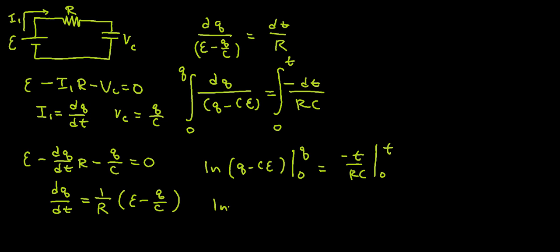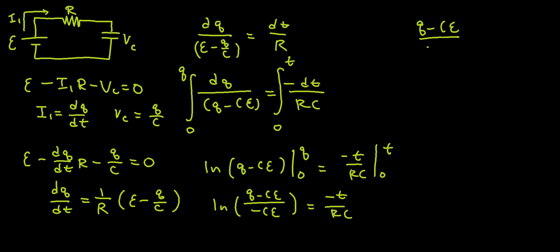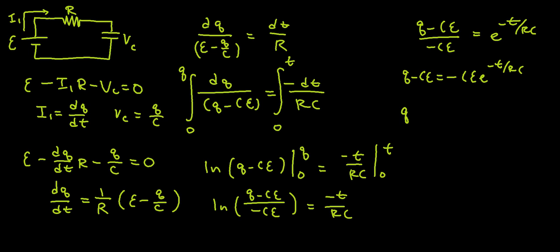Solving this, I get ln of (Q minus C·epsilon) over (negative C·epsilon) equals negative t over RC. Now I'm going to raise both sides to the natural exponent, and I get Q minus C·epsilon over negative C·epsilon equals e to the negative t over RC. So Q minus C·epsilon equals negative C·epsilon times e to the negative t over RC, and then I can write Q of t equals C·epsilon times (1 minus e to the negative t over RC).